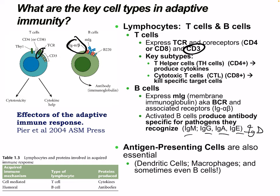The membrane-bound immunoglobulin and the secreted antibody are essentially the same molecule in different forms. Antigen-presenting cells, which are also essential, include dendritic cells, macrophages, and B cells.